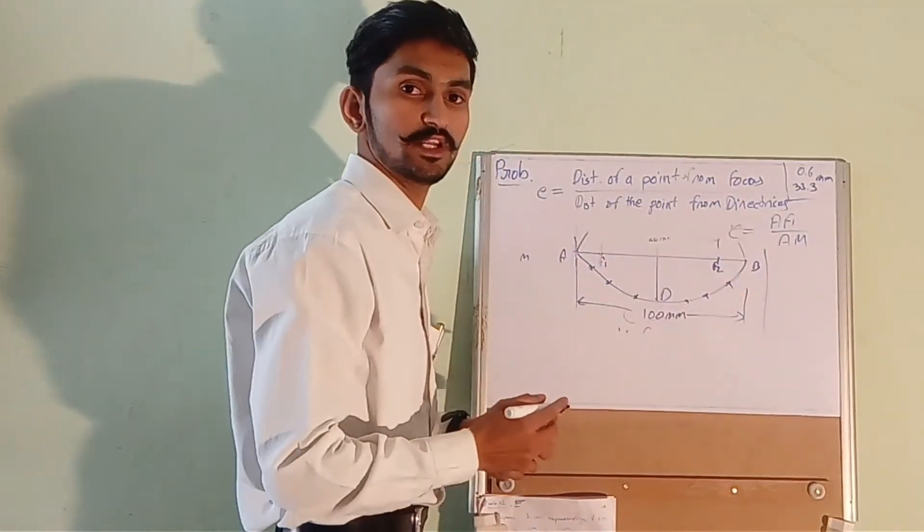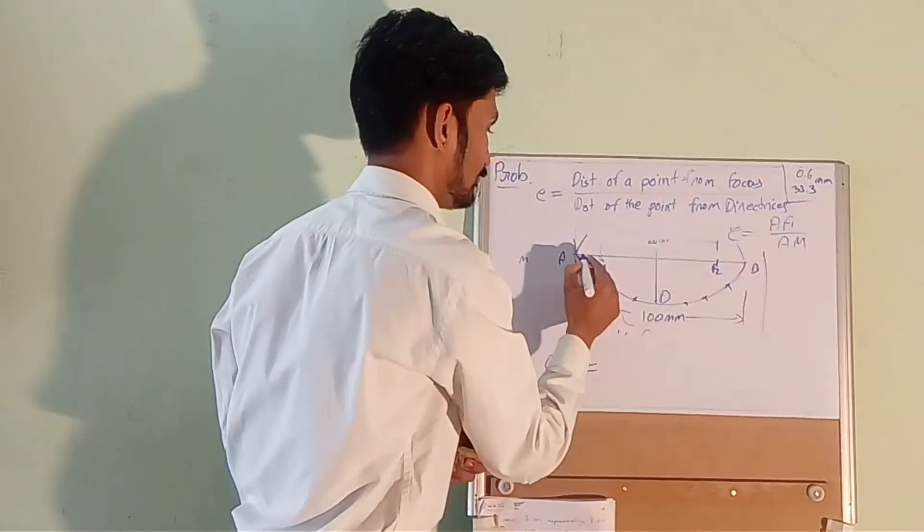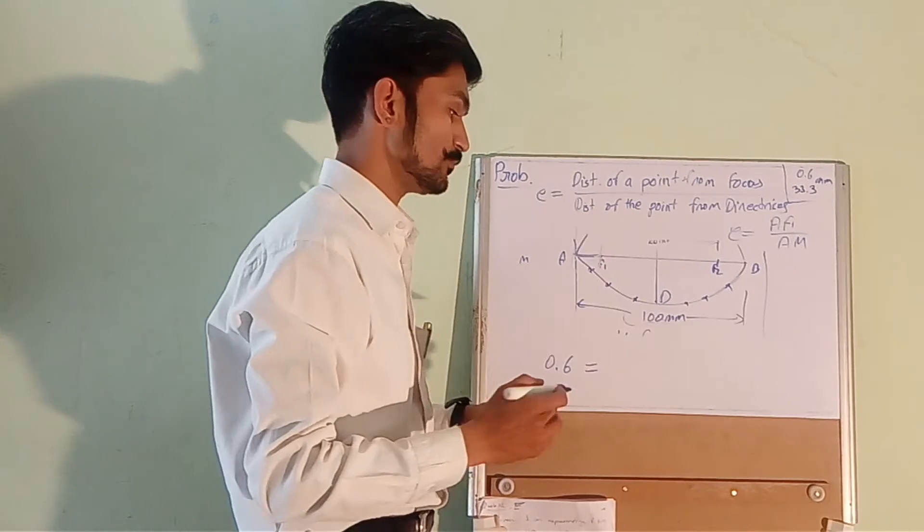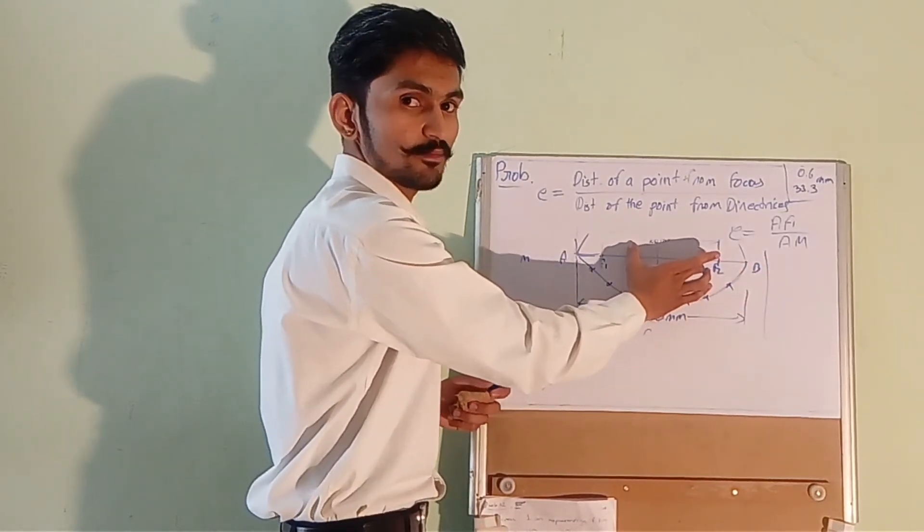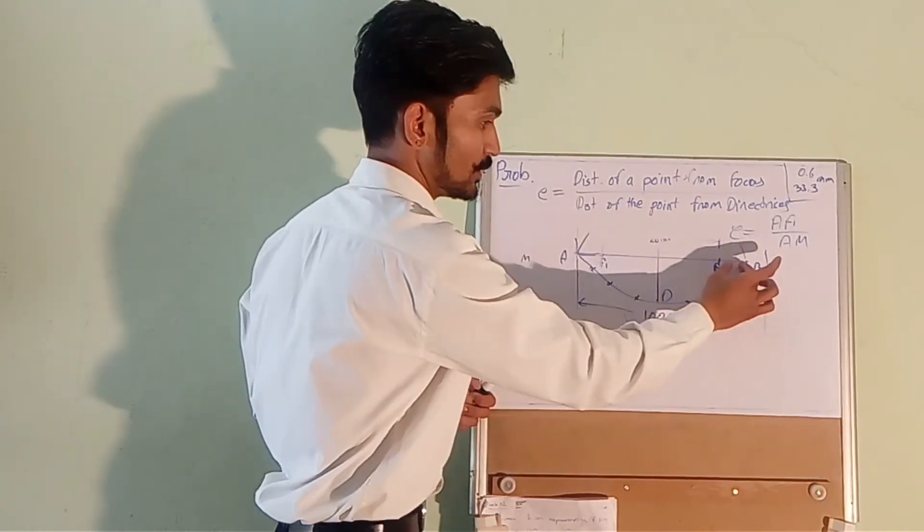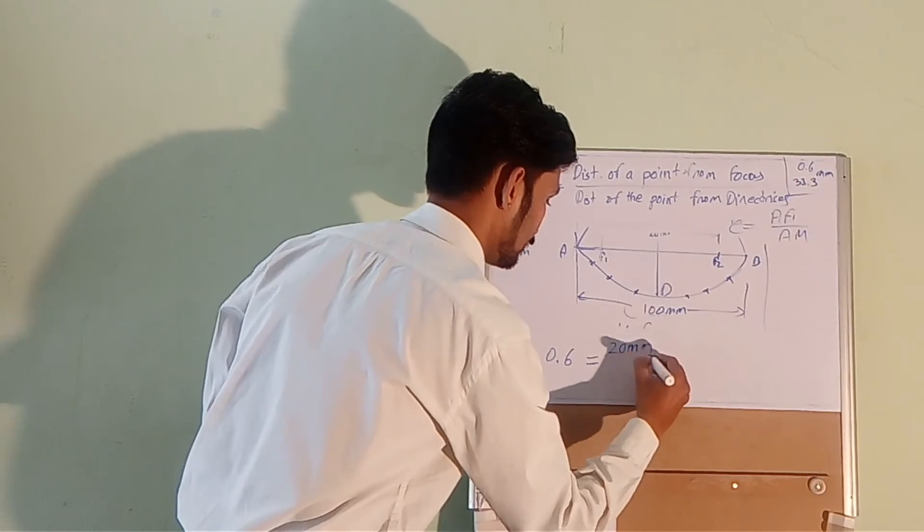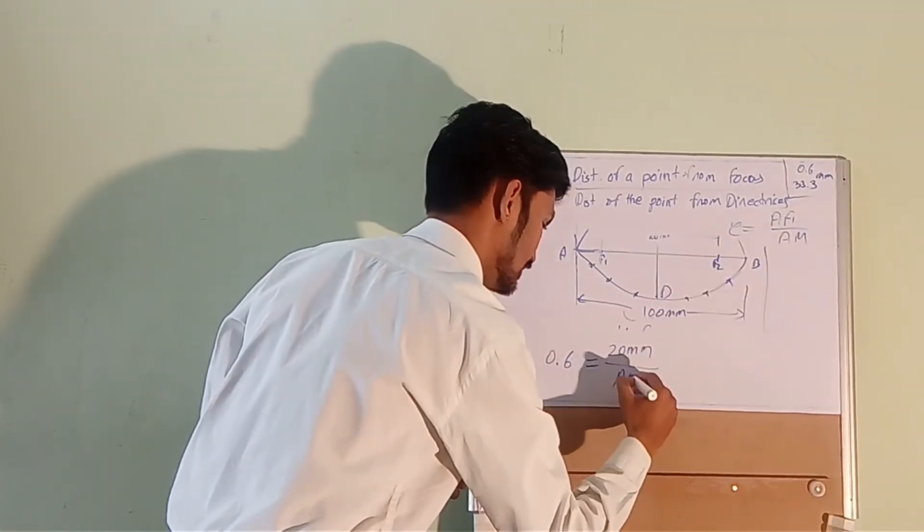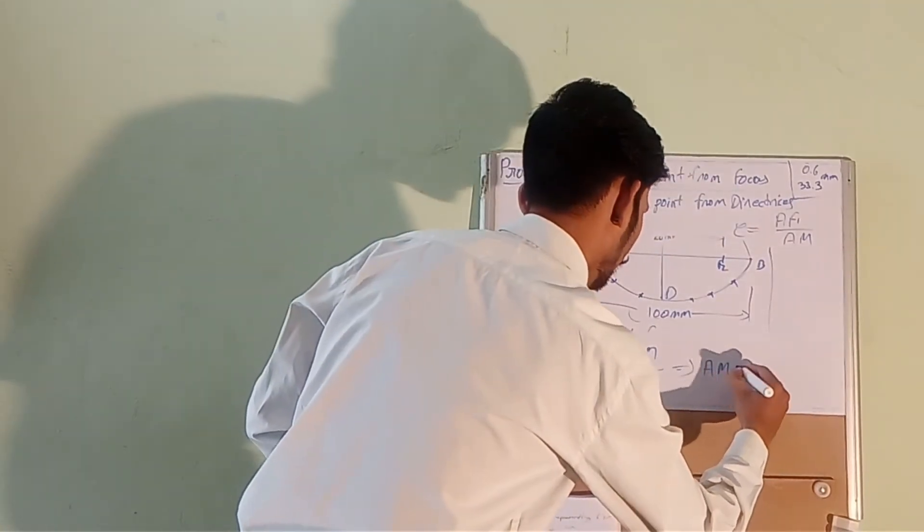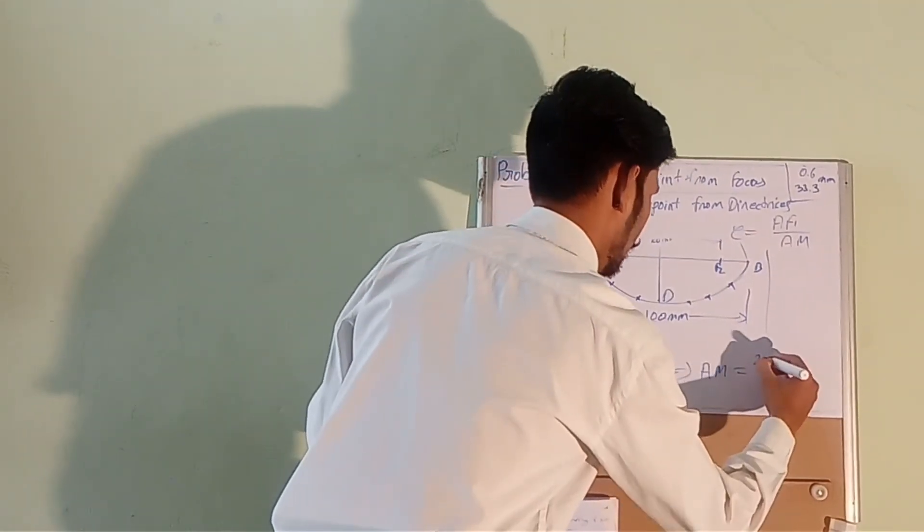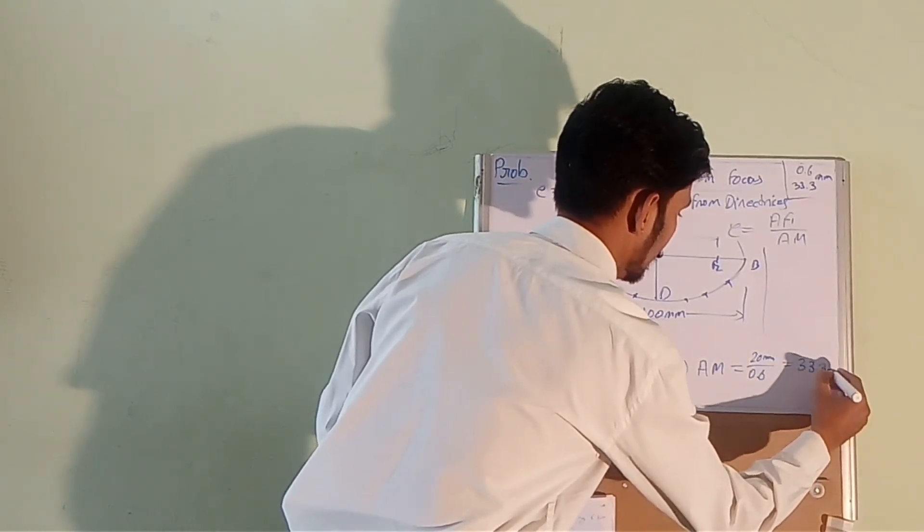We already have the value of eccentricity which is 0.6 and AF this is 20 mm. How is this 20 mm? Because the length of AB is 100 mm and this distance is 60 mm. The rest is 40 mm which is 20 here and 20 here. So this is 20 mm and AM as it is. So from here we can calculate AM and AM equals 20 divided by 0.6 which is 33.3 mm.